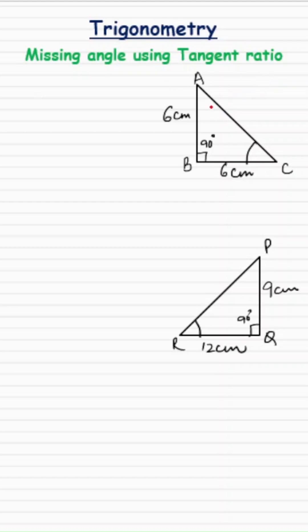Hey everyone, trigonometry once again. Let's see how tangent ratio is used to find the missing angle of right angle triangles.